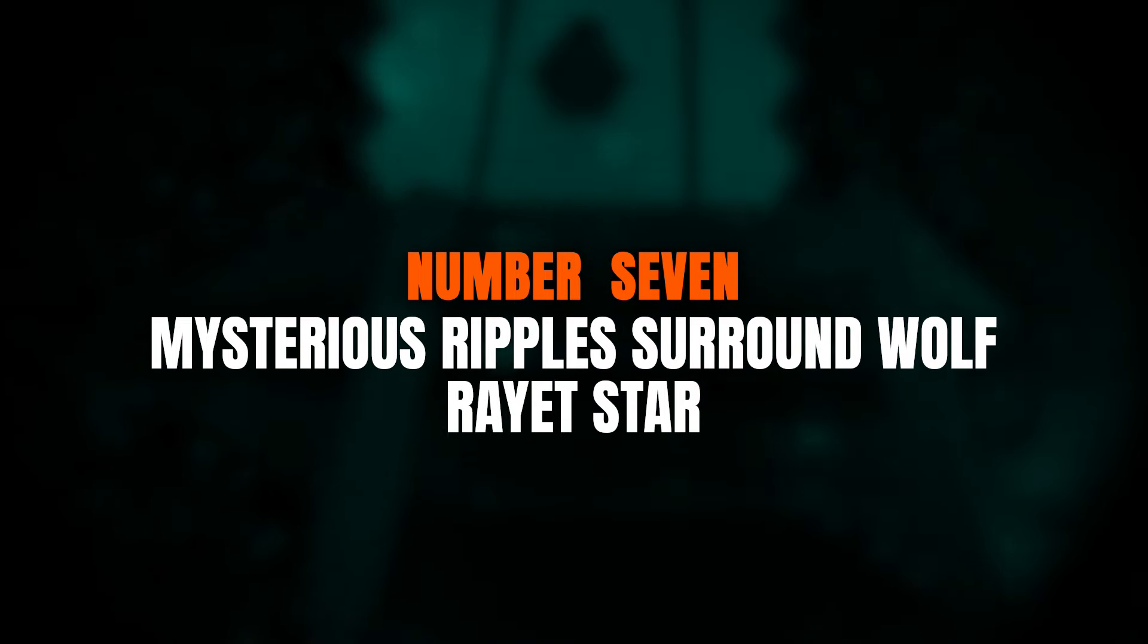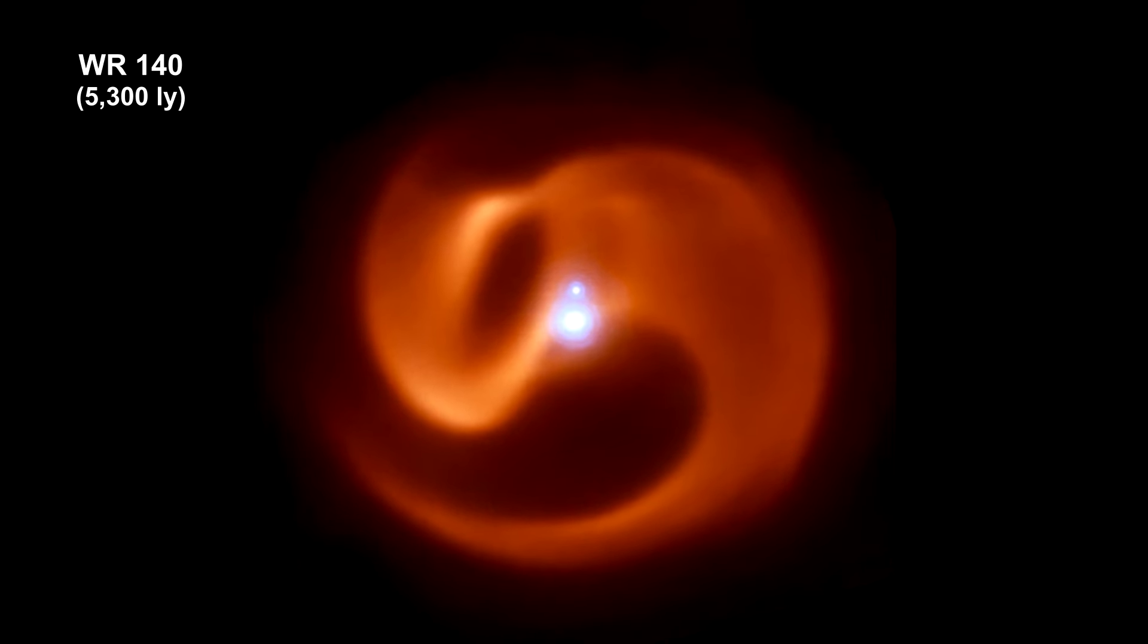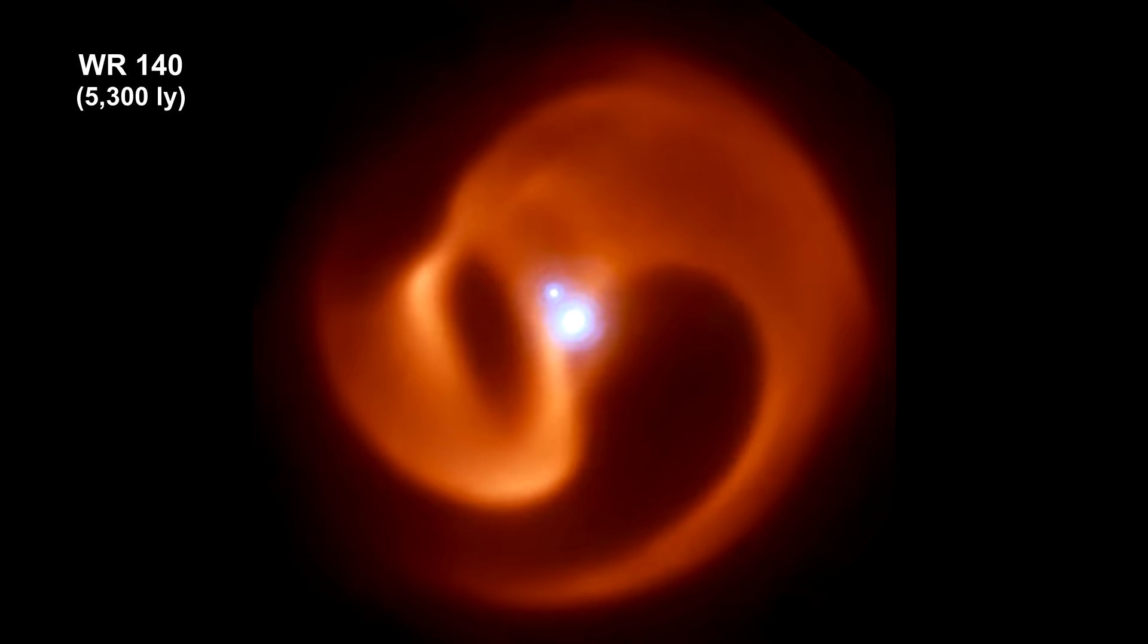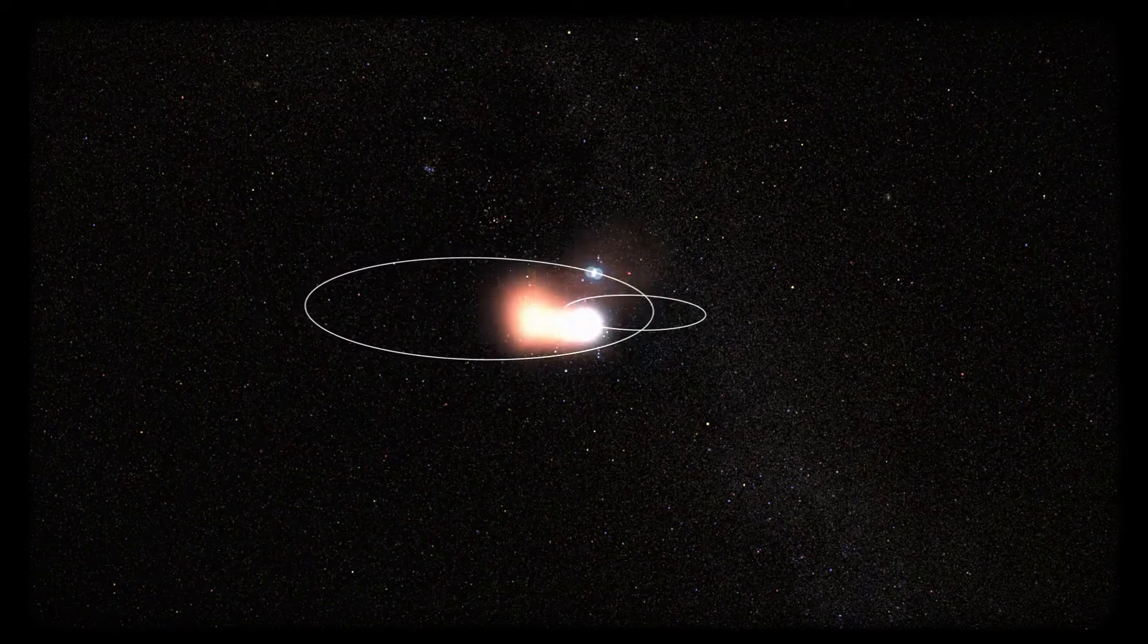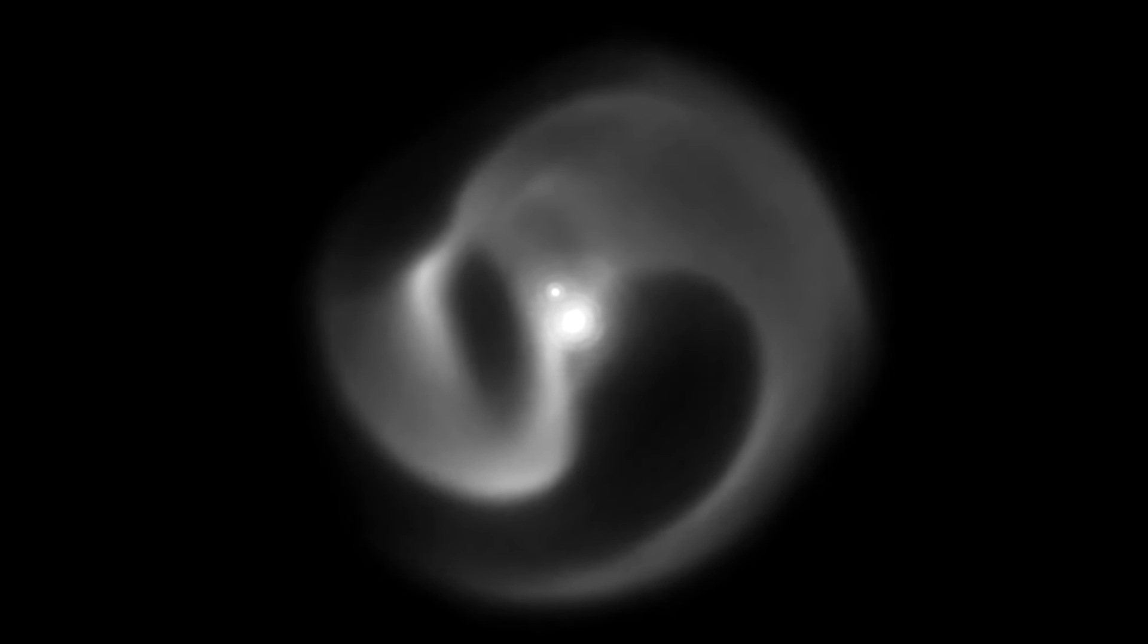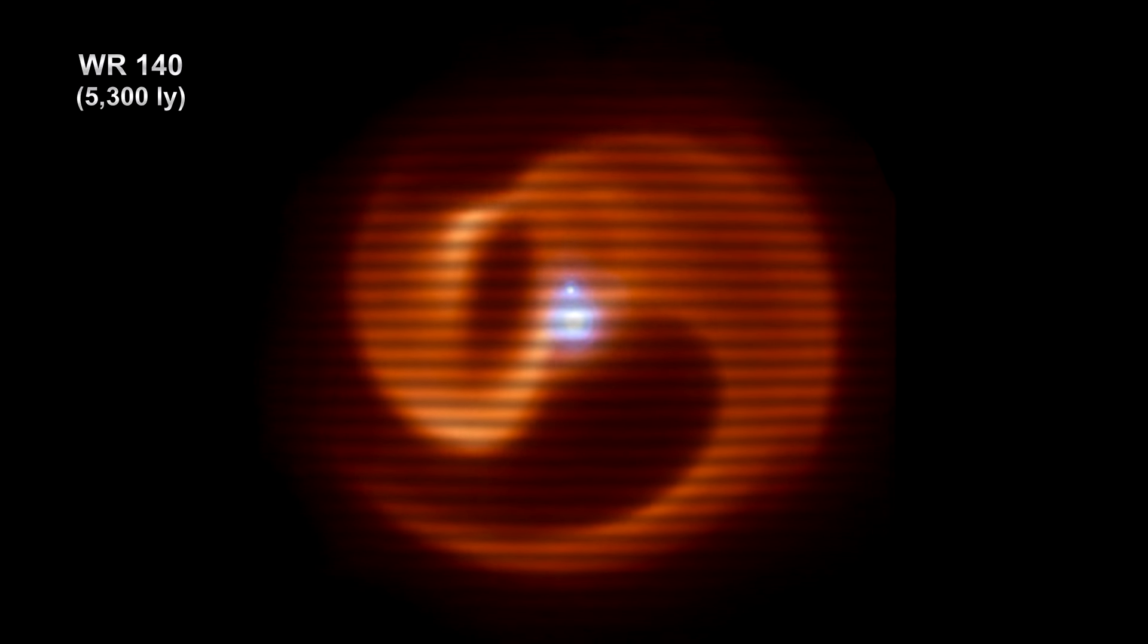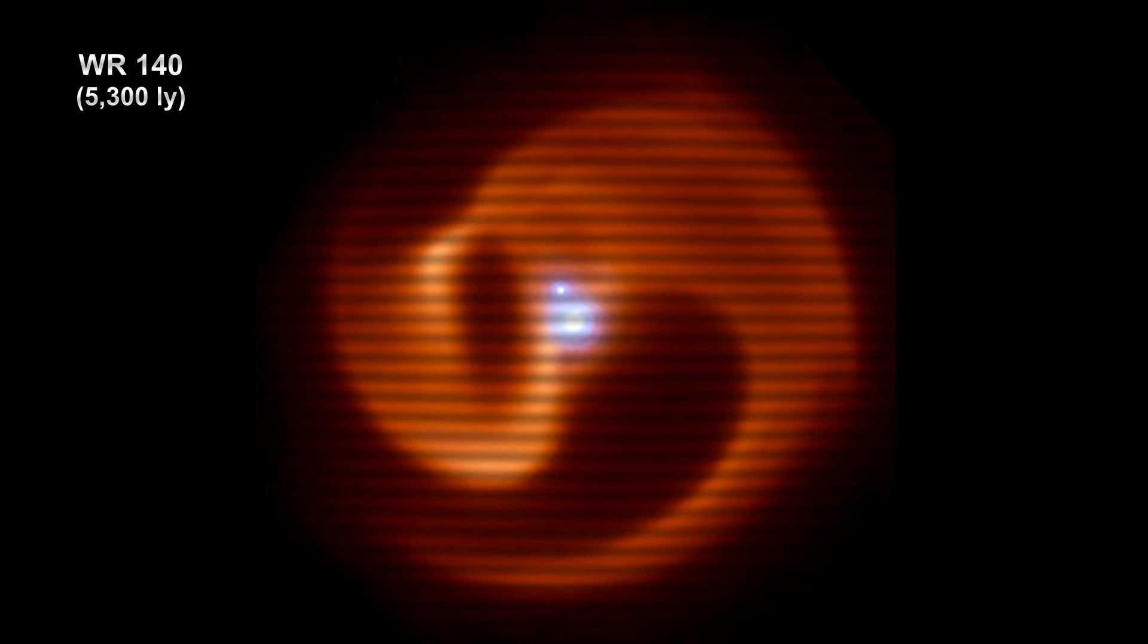Number 7. Mysterious Ripples Surround Wolf-Rayet Star. In July 2023, Webb captured an image of a distant star called WR-140, a Wolf-Rayet star with some truly mind-blowing details. Now, this isn't just any star. WR-140 features Webb's signature diffraction pattern, an imaging artifact. But what caught everyone's attention was the ripple-like pattern of concentric rings around the star, which have a slightly boxy shape. Unlike the diffraction pattern, these unlikely shaped rings are real features.